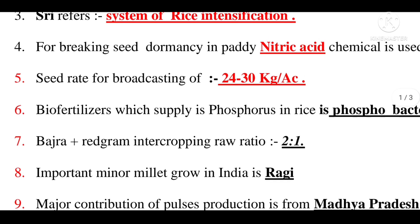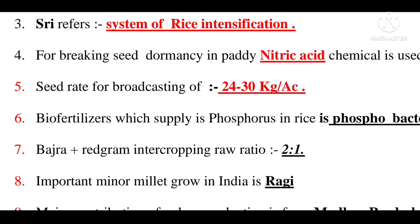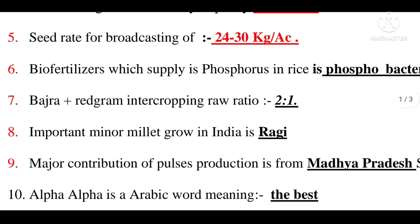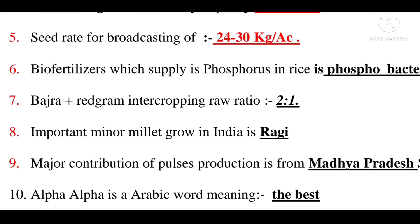Minor millet is grown in India. The major contribution of pulses production is formed at the state level in India.